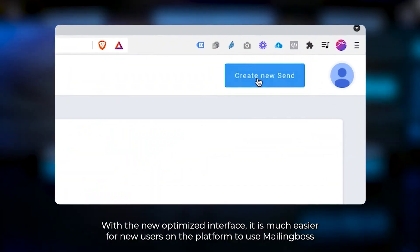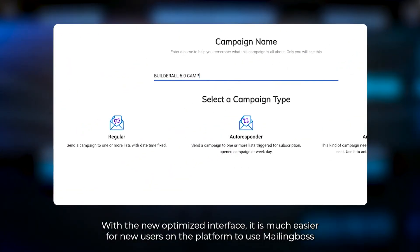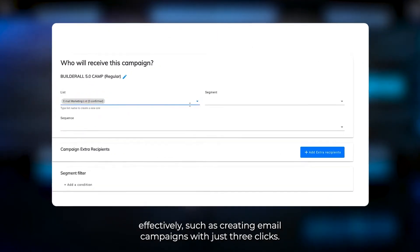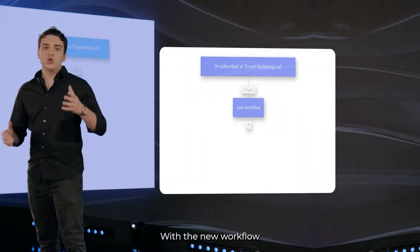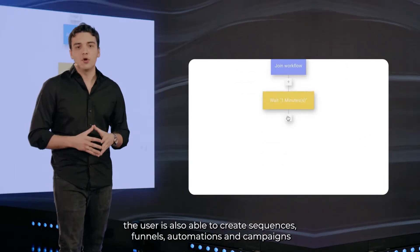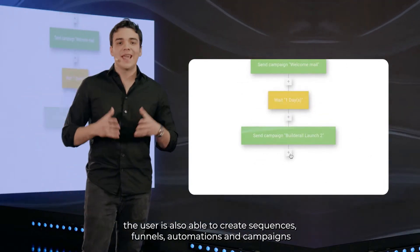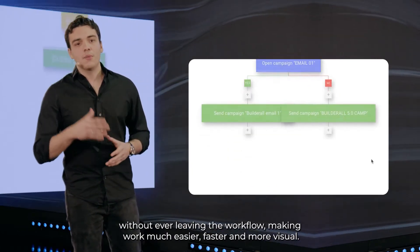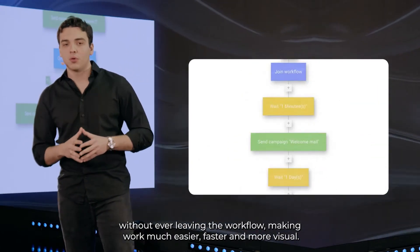With the new optimized interface, it is much easier for new users on the platform to use Mailing Boss effectively, such as creating email campaigns with just three clicks. With the new workflow, the user is also able to create sequences, funnels, automations, and campaigns without ever leaving the workflow, making work much easier, faster, and more visual.